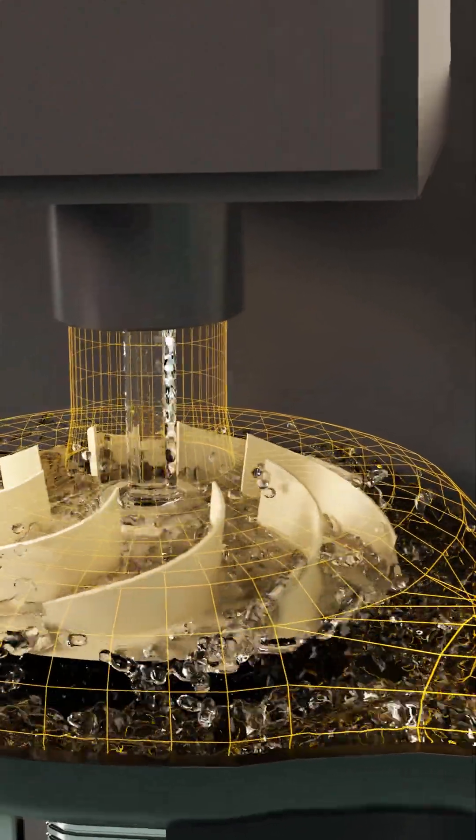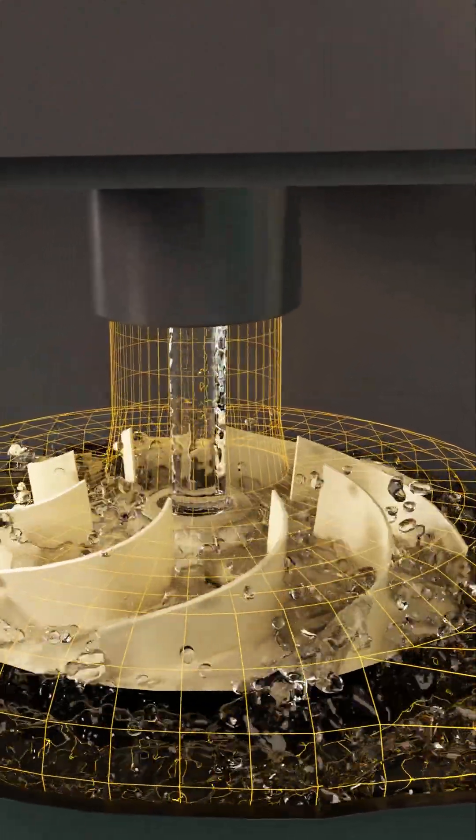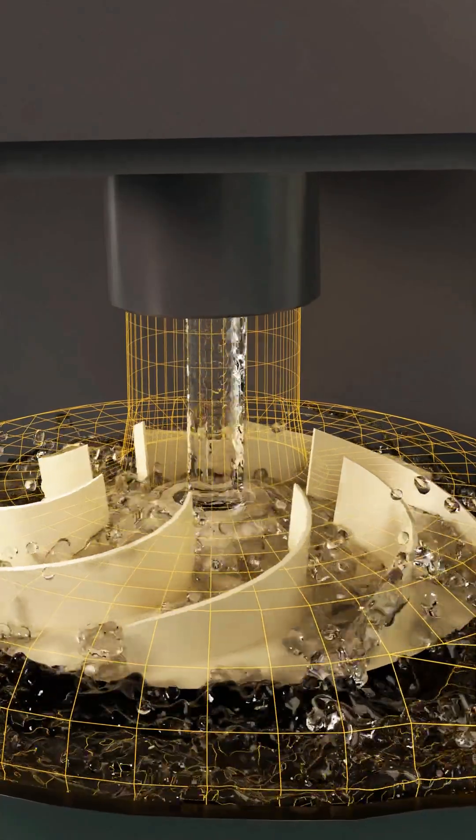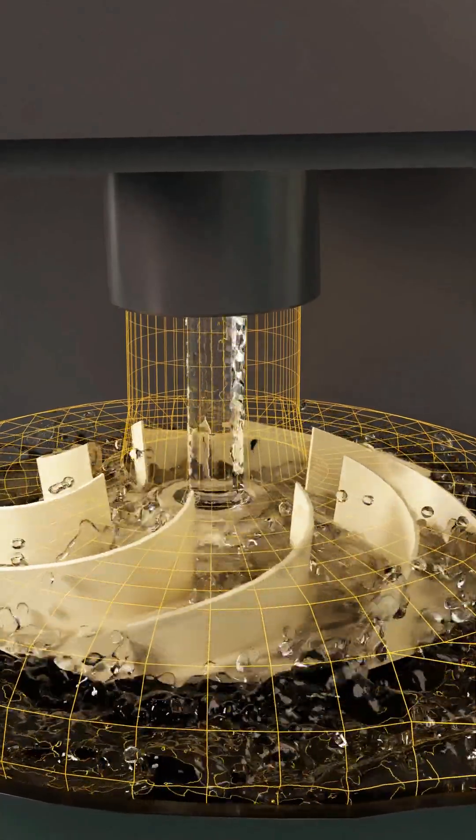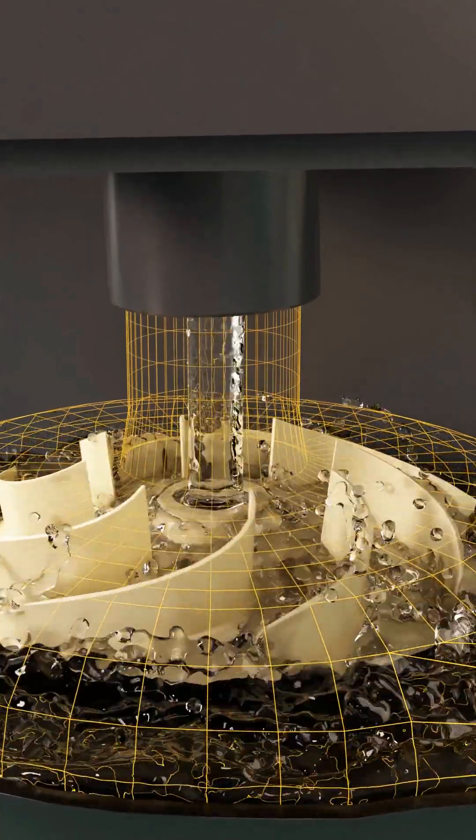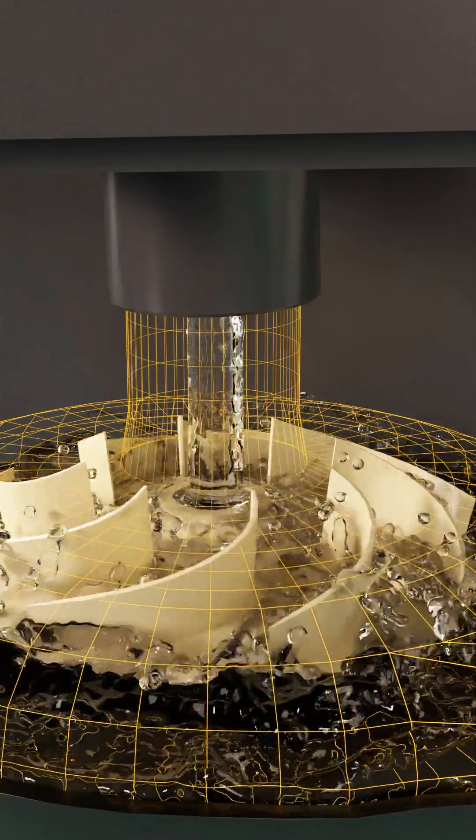As water enters the pump housing from the sump, it is drawn swiftly into the volute chamber. The impeller's high-speed rotation creates a centrifugal force, accelerating the water outward and upward through specially designed passages.